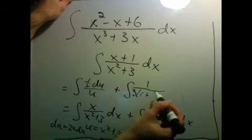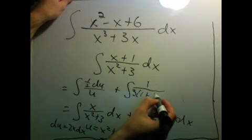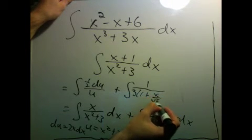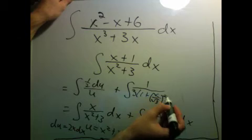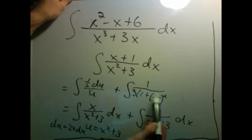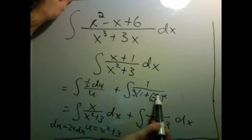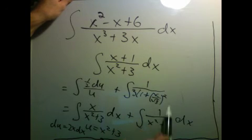And so I get 1 plus... And let me write this in kind of a funny way. Factoring the 3 out, I have to divide by a 3. I turn it into x over square root of 3, all of that squared.